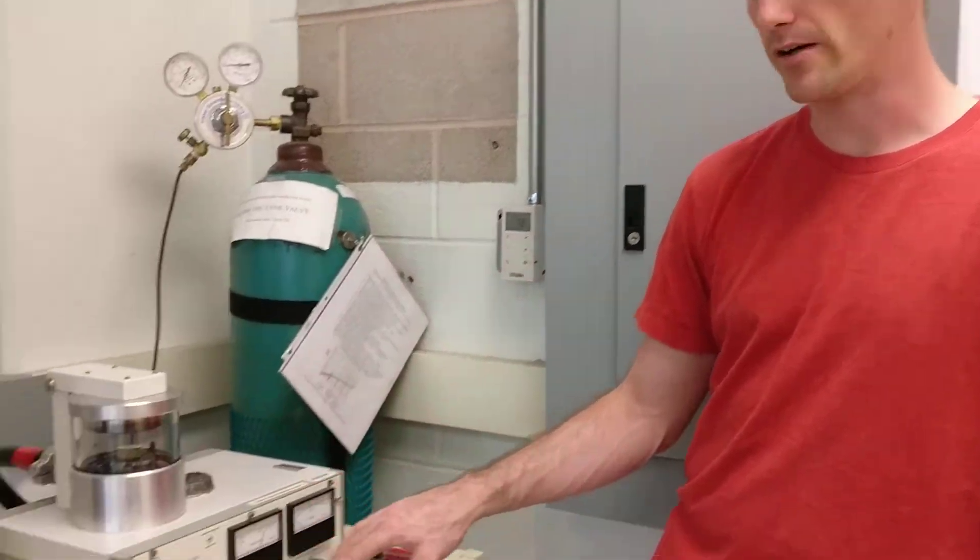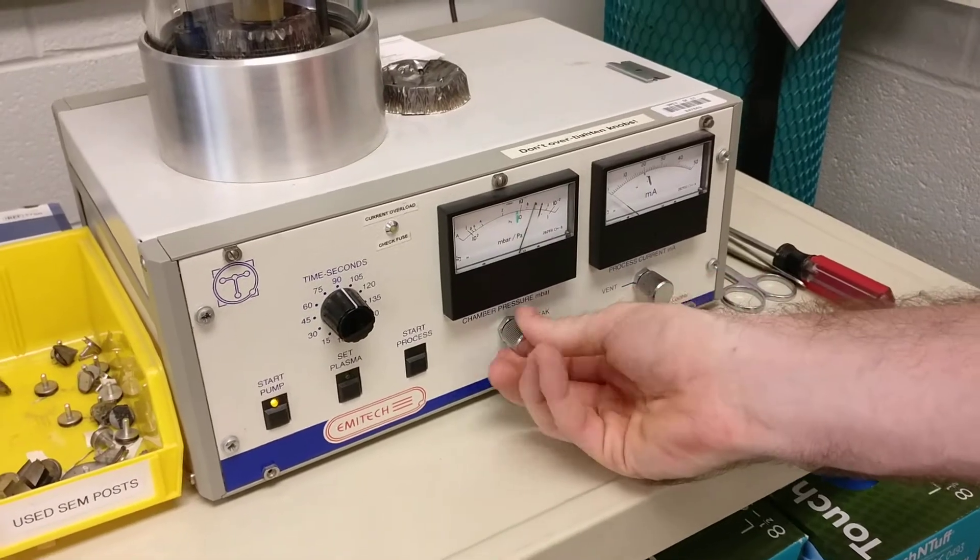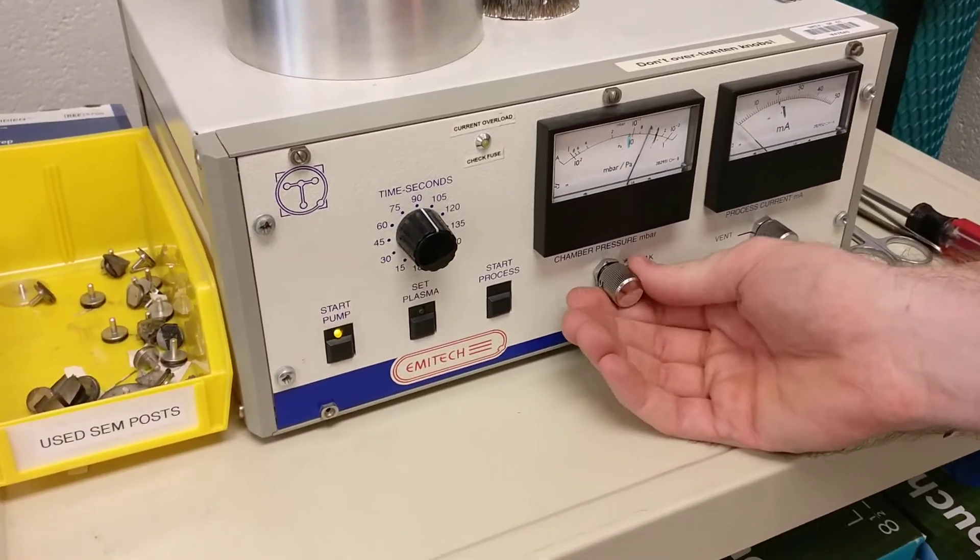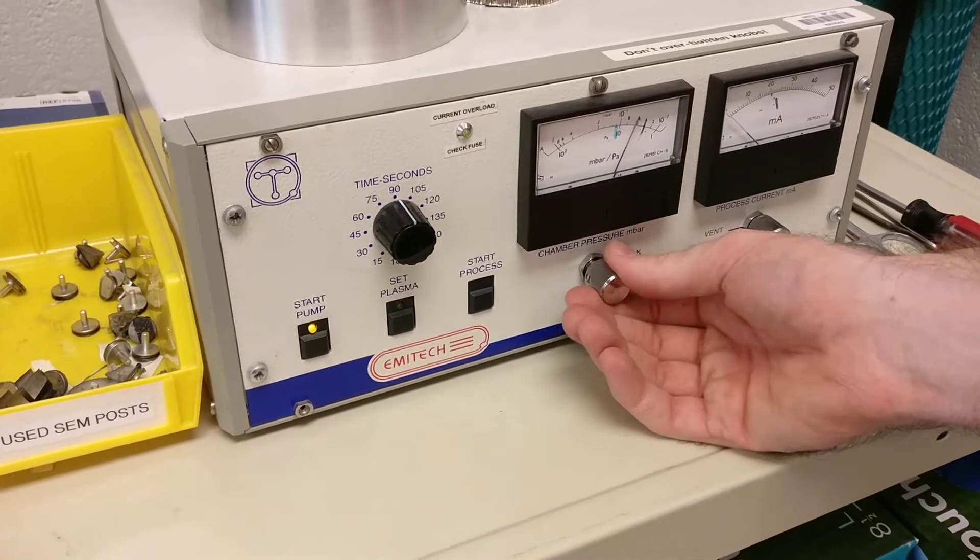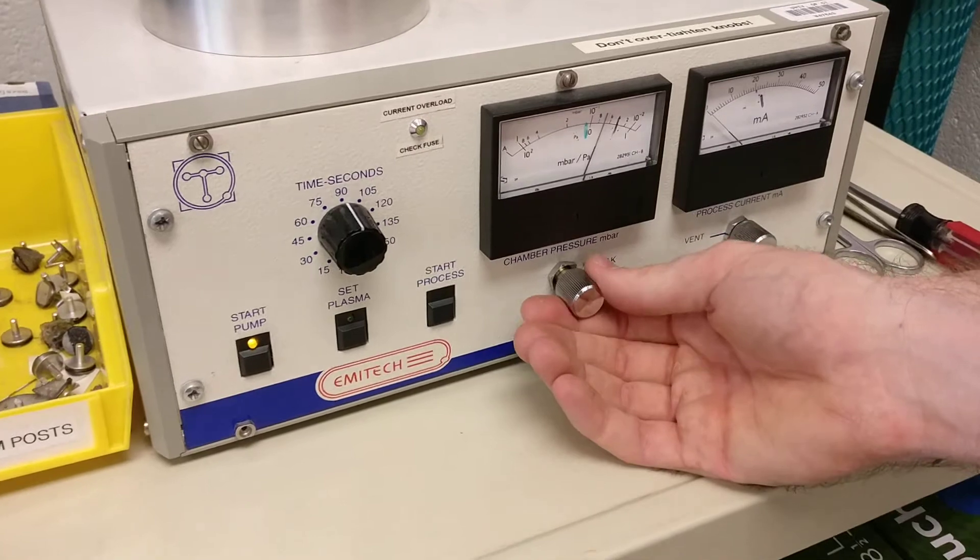Our pump is back down. We're going to open up this leak valve again and get it to this green line. The amount of current that flows is directly proportional to how much argon is in there. The more argon, the higher the current.